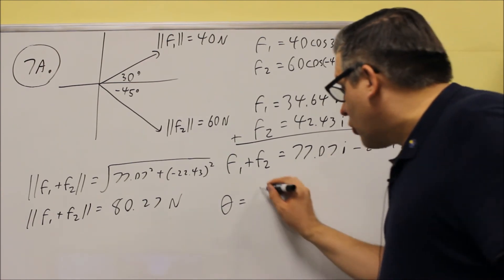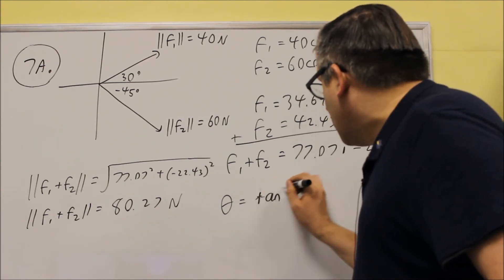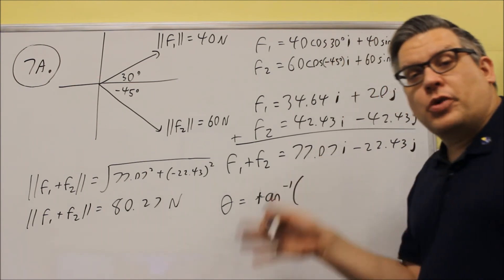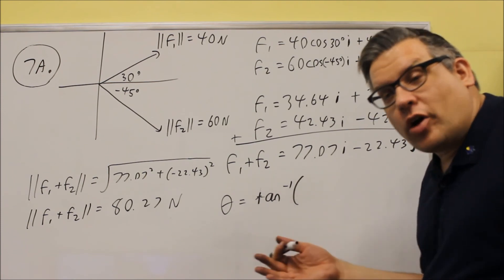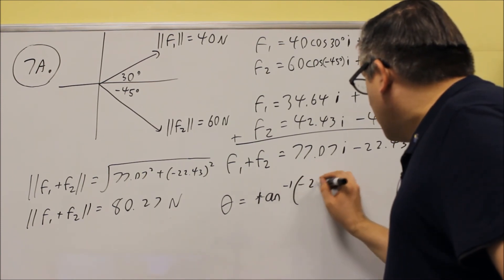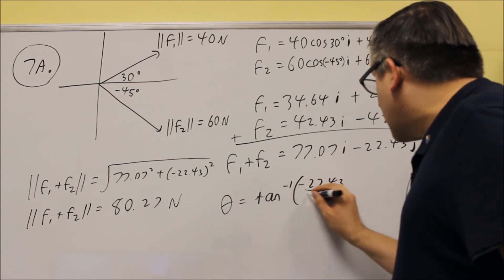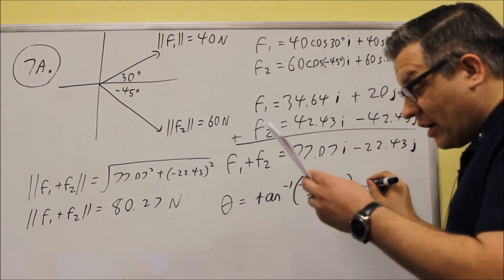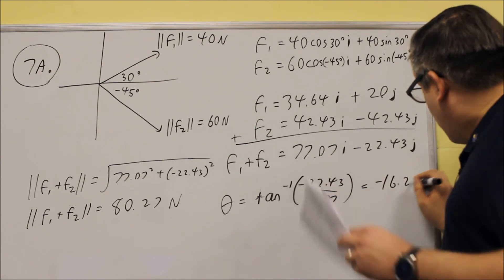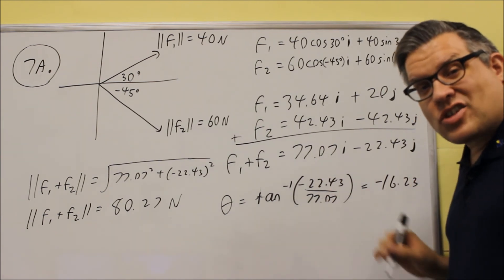So, because it is in the fourth quadrant, we're going to use the inverse tangent formula, but we don't have to add the 180 to it because you're in the fourth quadrant. One in four, you don't need to add the 180. We're going to do the y value over the x value, and again, when we do that in the calculator, negative 16.23 degrees, that's going to be the direction.